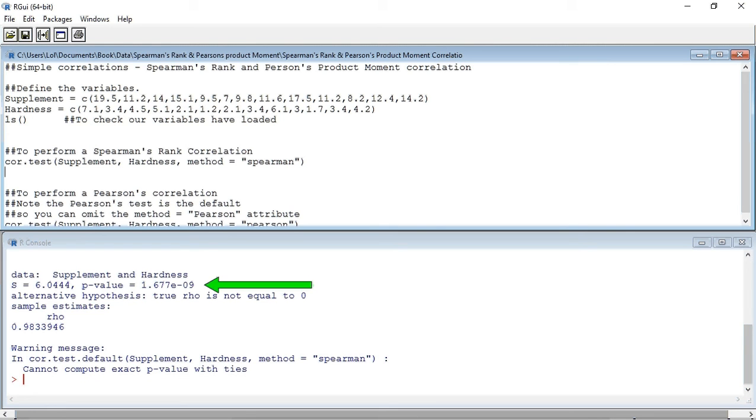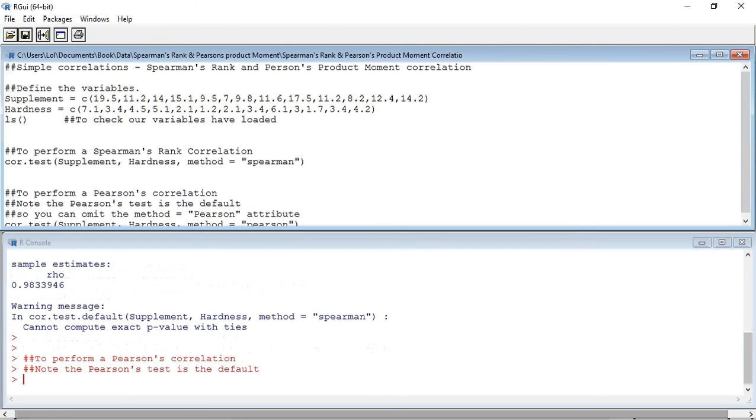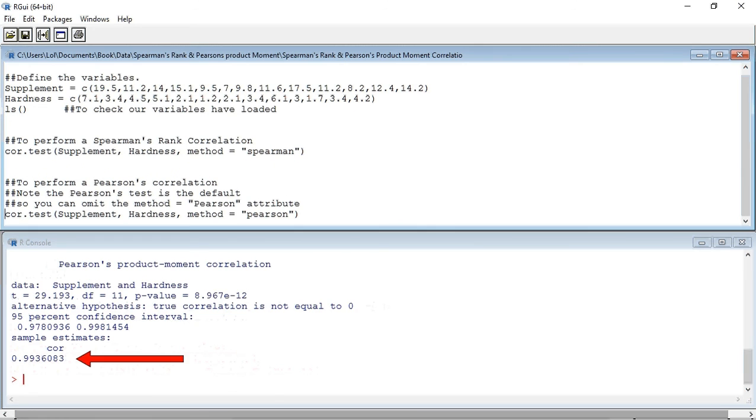So let's run the Pearson's product moment correlation. Again, I'm going to press Ctrl-R to run the lines of code one by one. R has given us the correlation coefficient, which in this case is 0.9936, and a probability value equal to 8.967 times 10 to the minus 12. This again suggests that our correlation is not only very good, but is highly likely to be true.